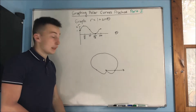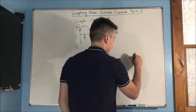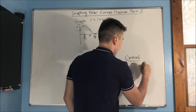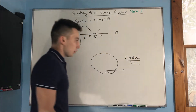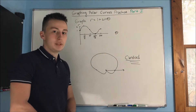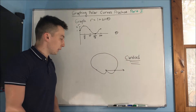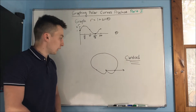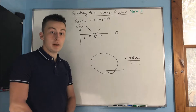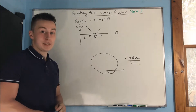Fun fact: this shape is called a cardioid because it supposedly looks like a heart. Me and my former Calc 2 teacher disagree on that — I think it looks more like the peach emoji, and he thinks it looks a little more like a butt. So that's going to do it for this problem.